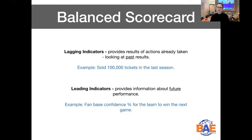There are two different types of indicators that you can use when you start building your balanced scorecard objectives. The first is called lagging indicators. These are the indicators that actually provide results of actions that have already been taken — so you're looking back at results. An example could be: you've sold 100,000 tickets in the last season. That's what we refer to as a lagging indicator.